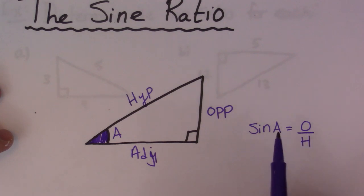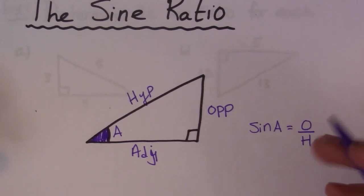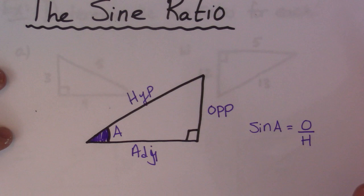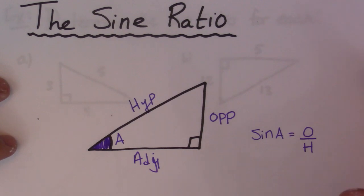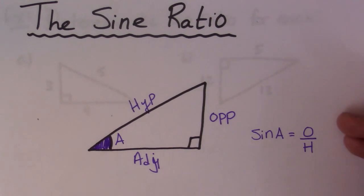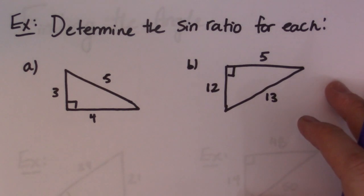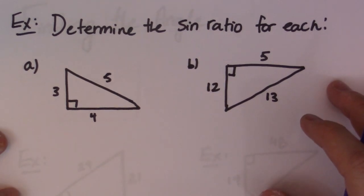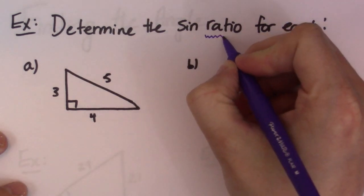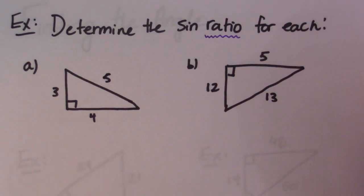That ratio changes with the angle, just like the sine changes with the angle. Don't get obsessed with where this comes from or what it actually means, because all it means is ratios of sides of triangles. It's more important for function at this point. Just know that it's useful for finding angles and it's useful for finding side lengths. So let's go through some examples and see how we can use the sine ratio to solve some questions.